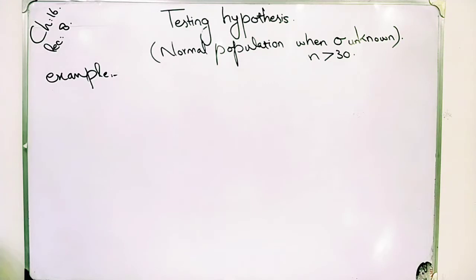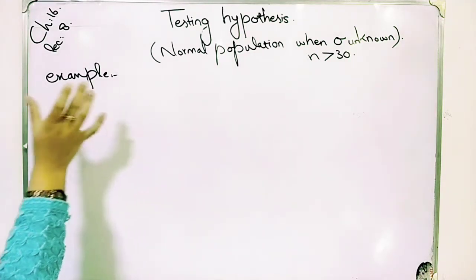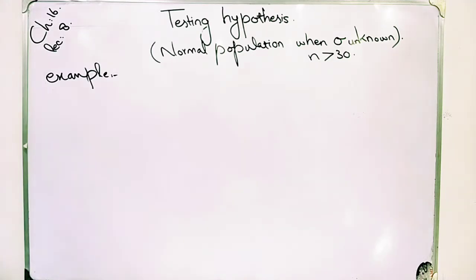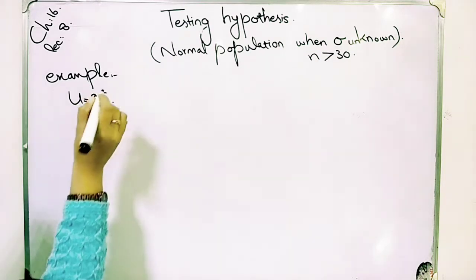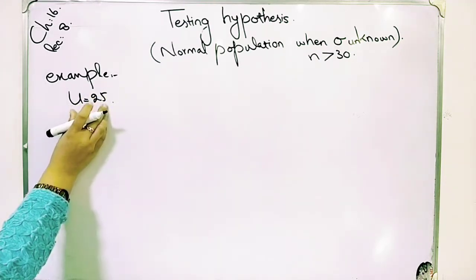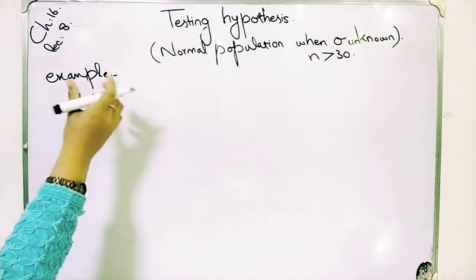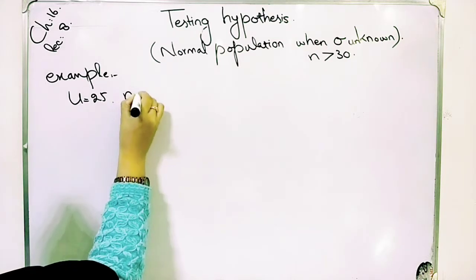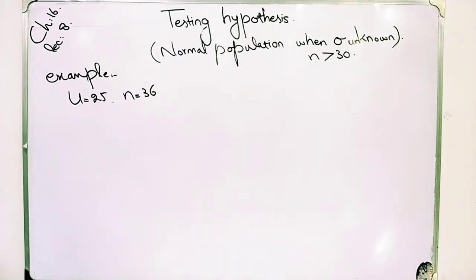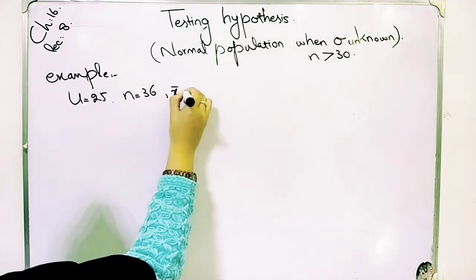In this example, the marks obtained by students at a large number of colleges are known to be normally distributed with a mean of 25. So we have μ = 25 given. The null hypothesis is mean equals 25, the alternative is mean not equals 25. A random sample of size n = 36 showed an average number of marks (x̄) of 27.